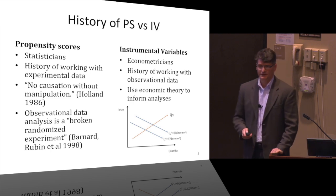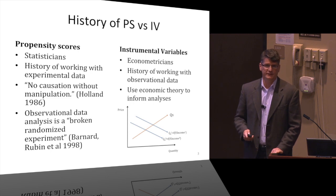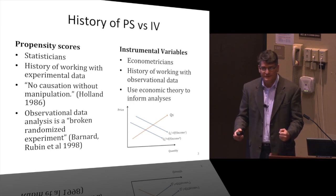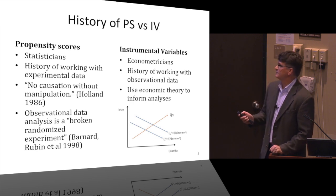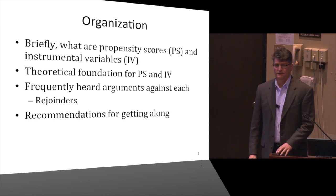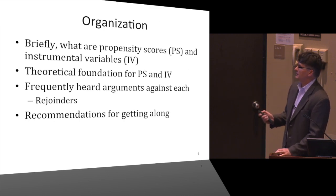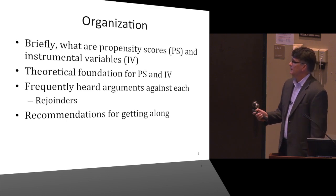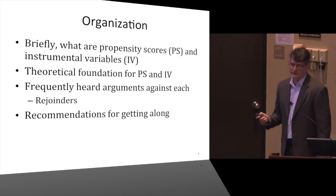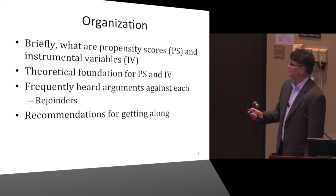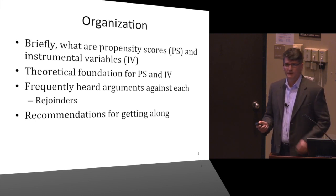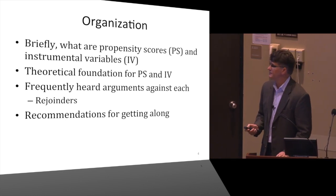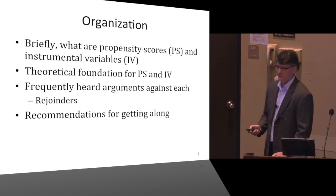It flows very nicely from supply and demand curves to comparative effectiveness for econometricians, maybe not so smoothly for biostatisticians. In some study sections, if somebody says this person is going to use propensity scores, everyone braces themselves. What I want to do is briefly go over what propensity scores and instrumental variables are, look at differences in theoretical foundations, go over frequently heard arguments against each, and conclude with some recommendations for getting along.